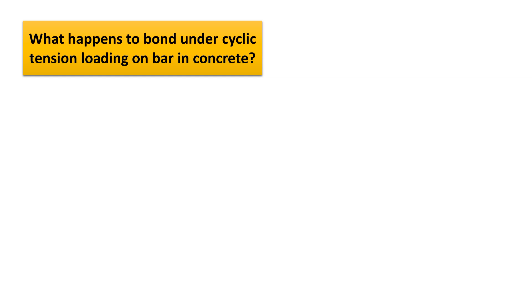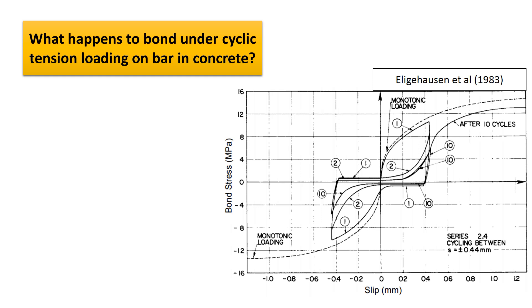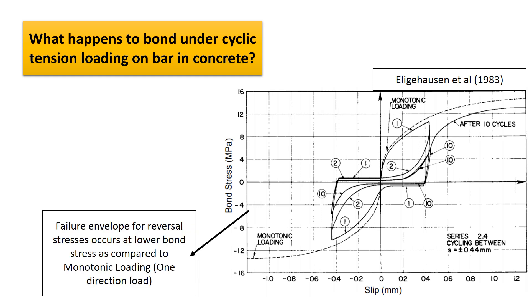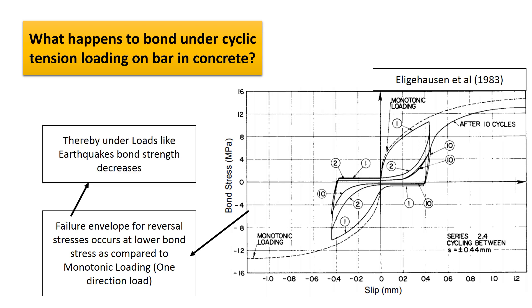Another inquiry is what happens to bond when there is cyclic rather than monotonic loading acting on a bar in concrete. The work of Elieger Hazen et al. in 1983 is a perfect representation of the difference between monotonic and cyclic loading. It was observed that a failure envelope for reversal stresses occurs at lower bond stresses compared to monotonic loading. Thereby, under cyclic reversal loads such as earthquakes, bond strength between concrete and steel decreases.